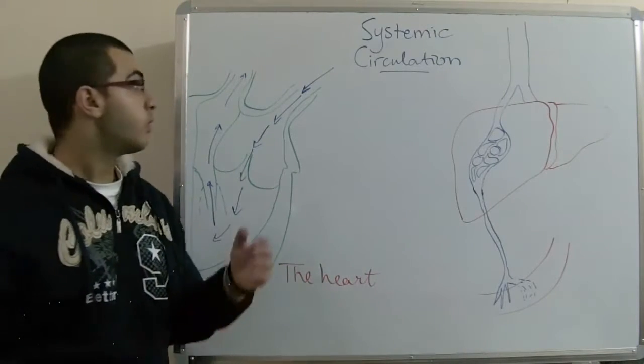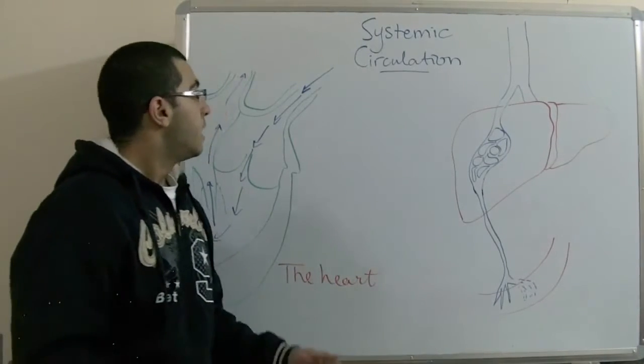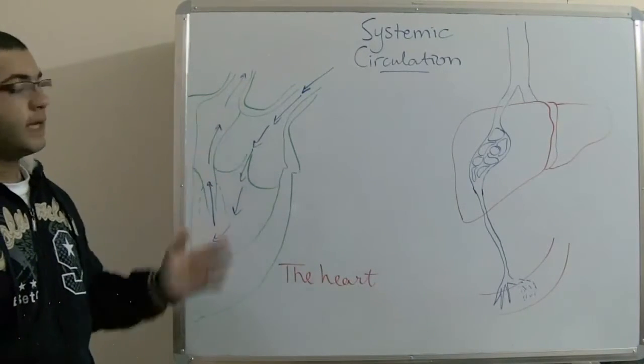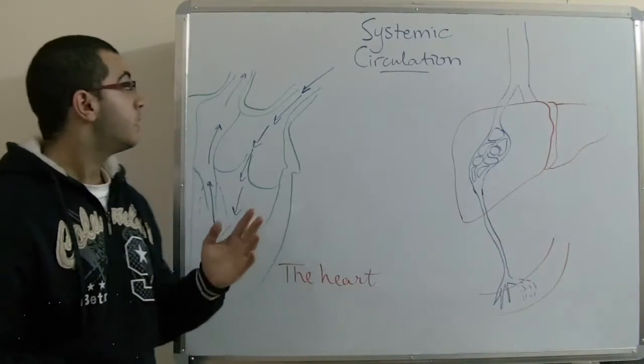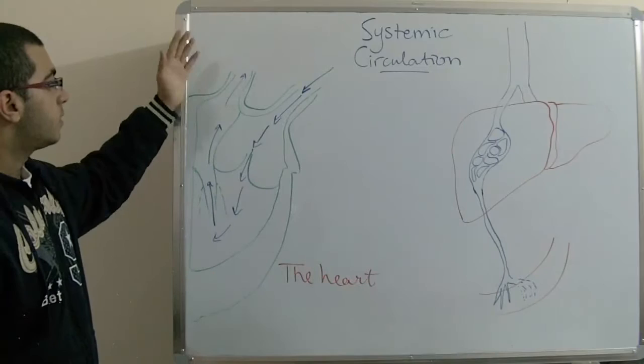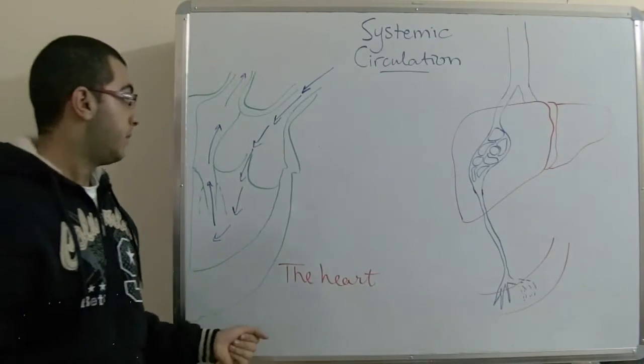The aorta is an artery and it gives branches for many arteries that spread all over the body, upwards to the side of the head and downwards for the limbs and other body parts.